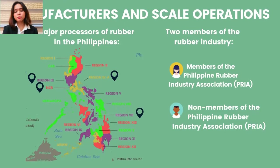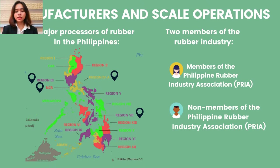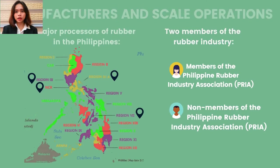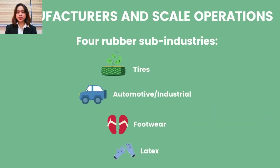The major regions that process rubber in the country include the National Capital Region, Central Luzon, Calabarzon, and Central Visayas. Members of the rubber industry can be classified into two: members of the Philippine Rubber Industry Association and non-members such as Yokohama Tire Philippines Inc. The rubber industry's sub-industries include tires, automotive or industrial, footwear, and latex.